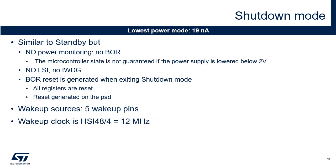Shutdown mode is the lowest power mode, with only 19 nA at 3V. This mode is similar to standby mode but without any power monitoring — the brown-out reset is disabled. Hence, the microcontroller state is not guaranteed if the power supply drops below 2V. The LSI is not available and consequently neither is the independent watchdog. A brown-out reset is generated when the device exits shutdown mode. All registers are reset and a reset signal is generated on the pad.